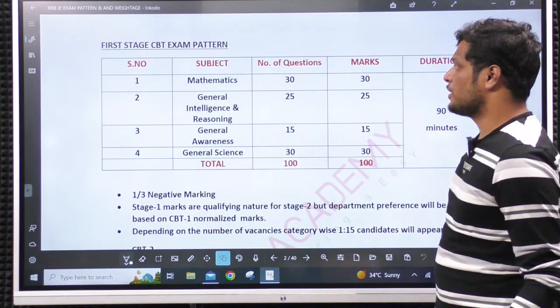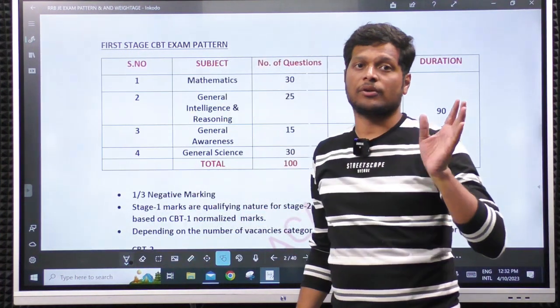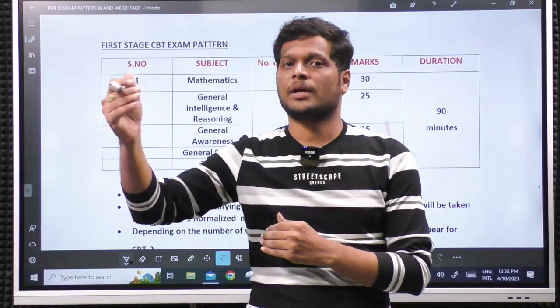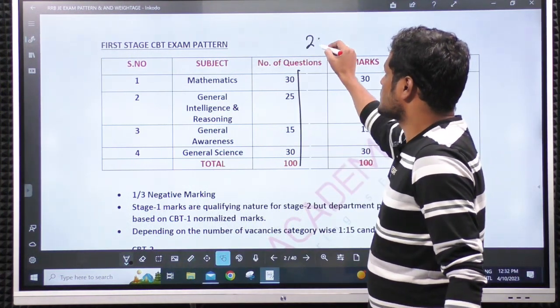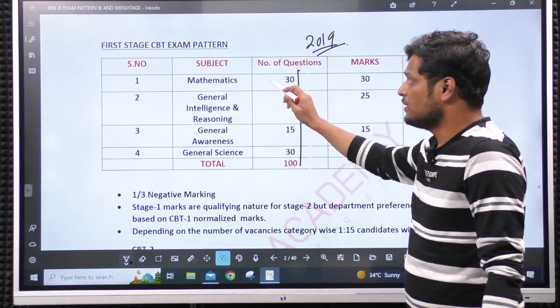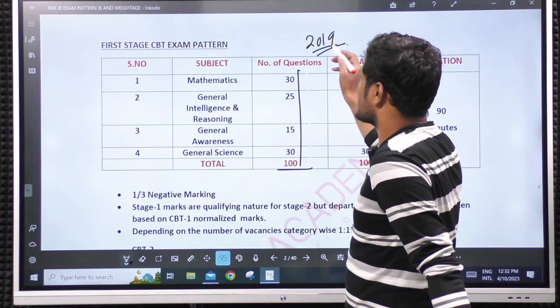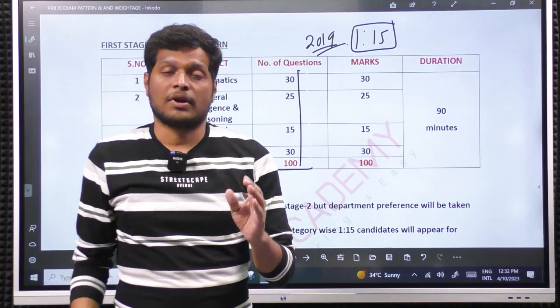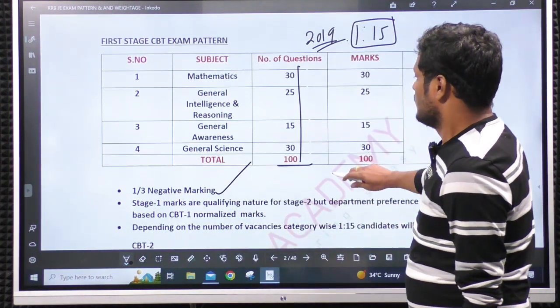Regarding RRBJE, we have two stages: CBT-1 and CBT-2. This is the weightage distribution. Whatever the previous questions we have in 2019—before 2019 we have recruitment in 2014, but that syllabus is completely different, that pattern is completely different. There is no use of preparing papers prior to 2019 recruitment. This is the latest syllabus, updated from 2019 notification. This is the pattern: mathematics which is SSE standard, general intelligence and reasoning, general awareness and general science for 100 marks. Even though this is just qualifying nature, from this one is to fifteen students, depending on number of vacancies category-wise, will be called for CBT-2. Interviews and one-third negative marking is also there.